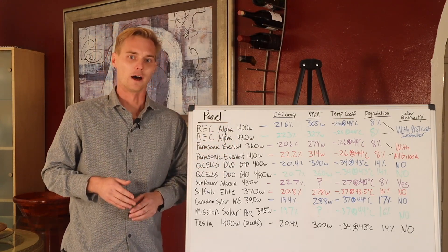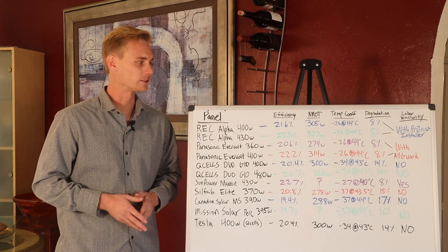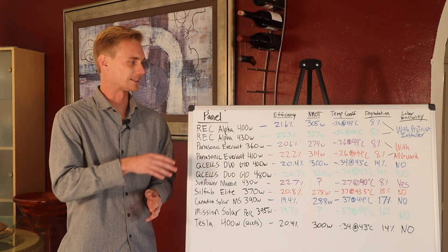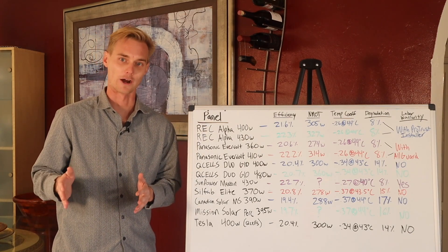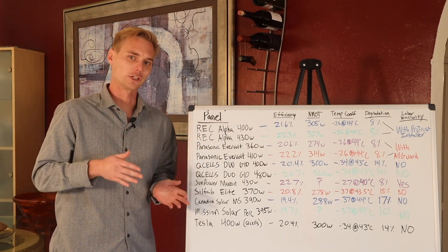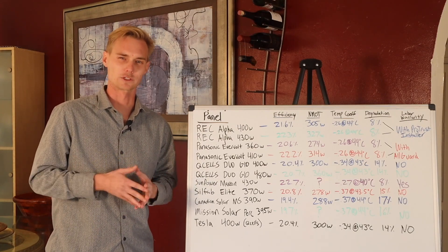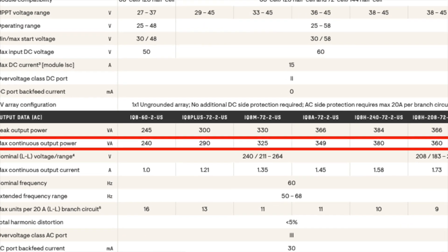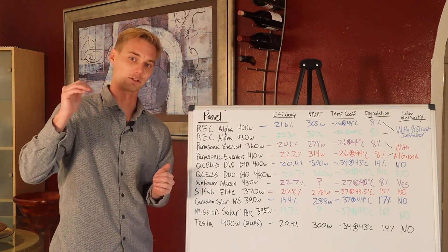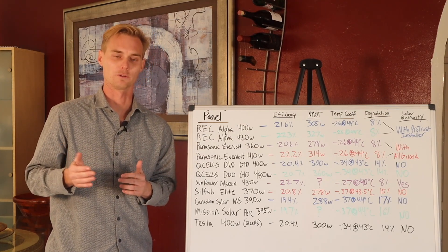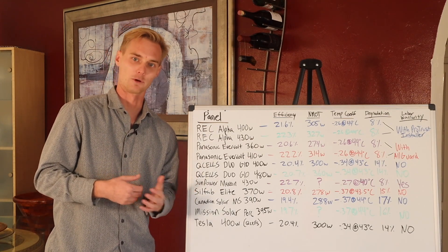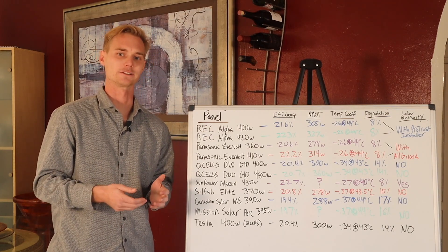The NMOT rating is the real world watt output. The watt rating is your standard test condition rating, which is in a room temperature environment. The NMOT rating is actually a little bit of a better number to go off of, and people get confused about why the panel is rated so much higher than what their inverter can output. The closer the NMOT is to the standard test condition rating, that can be an indicator for a higher quality panel.